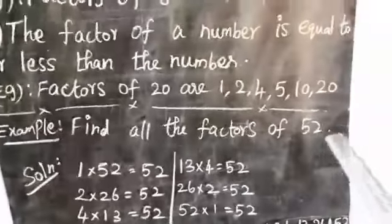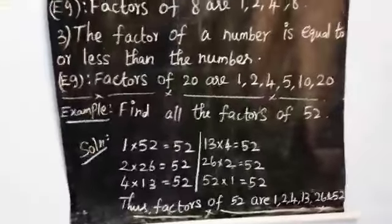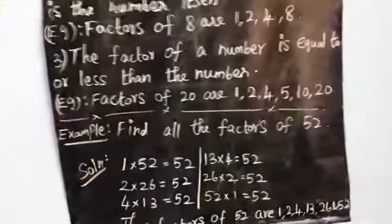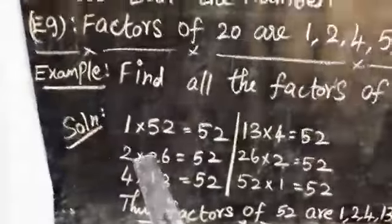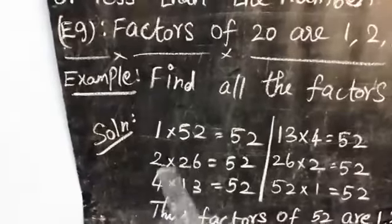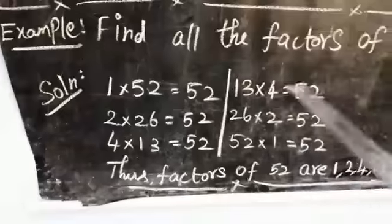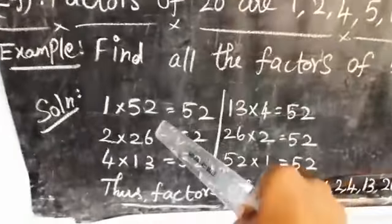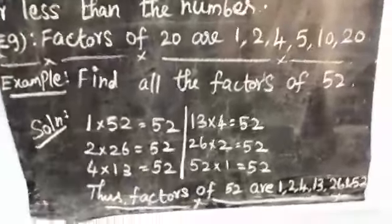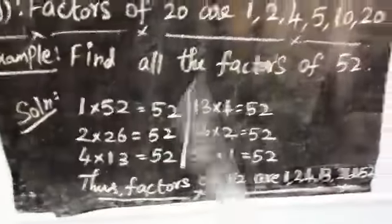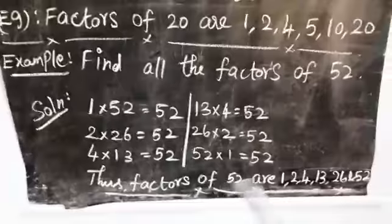Look at the example: find all the factors of 52. Solution — we find all numbers which when multiplied give 52. 1 into 52 equals 52. 2 into 26 equals 52. 3 does not divide 52 exactly. 4 into 13 equals 52. 13 into 4 equals 52. 26 into 2 equals 52. 52 into 1 equals 52. 5, 6, 7 and other numbers do not divide 52 exactly. So the factors of 52 are 1, 2, 4, 13, 26, and 52.